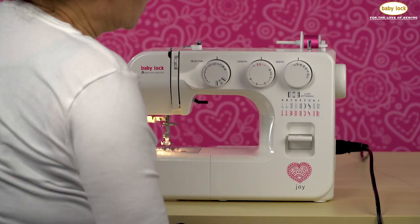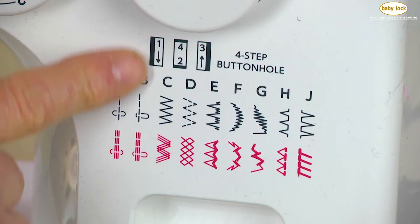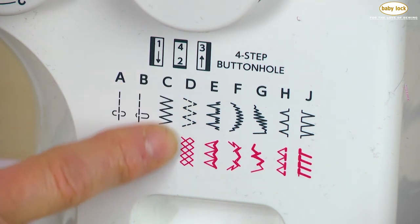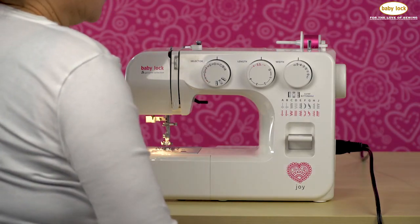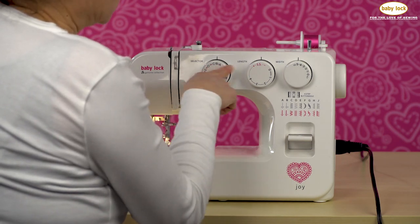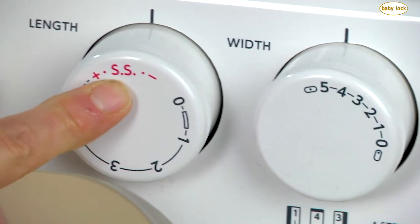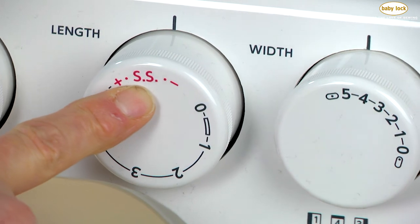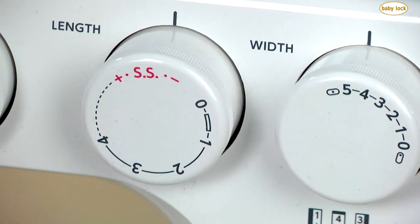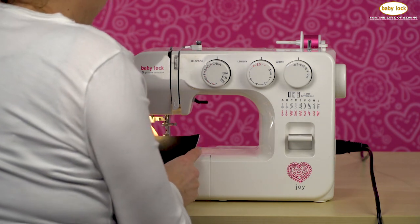If we come to our stretch stitches, the rickrack stitch is really pretty when you need a decorative thread, as is the smocking stitch. So let's start with that rickrack stitch, which is stitch number C. I'm going to make sure I've got the stitch selector on C, and I have my length at that SS setting because it's a stretch stitch, and I'm going to leave that width at that setting of 5.